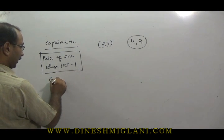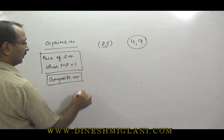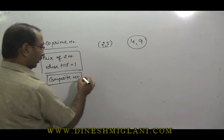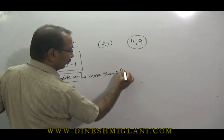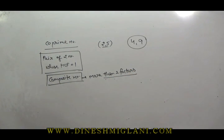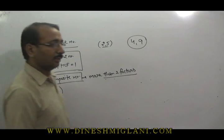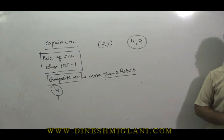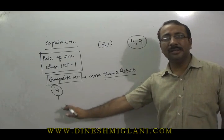Opposite to the prime number, we generally call a number a composite number. A prime number has only two factors — one and itself. A composite number has more than two factors. The smallest composite number is 4, because 1 is neither prime nor composite, and 2 and 3 are prime numbers — so the smallest composite number is 4.